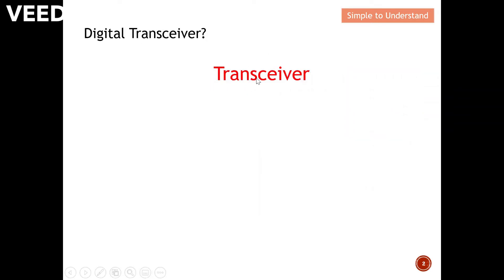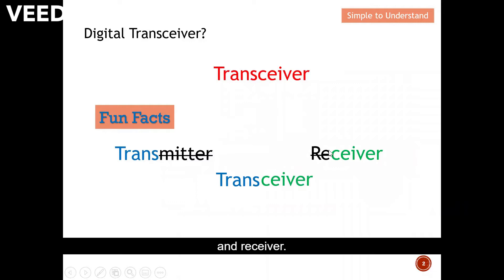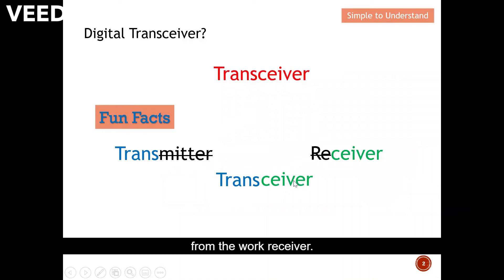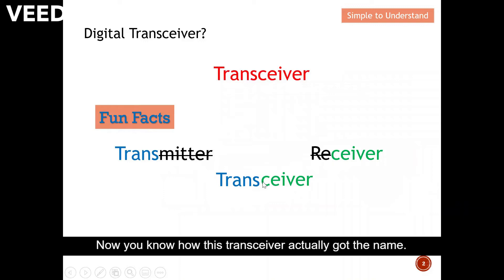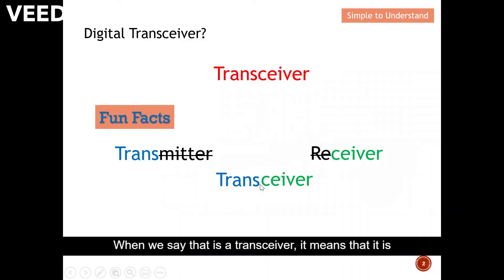So let's start by having a fun fact. How does this transceiver actually got the name? The transceiver actually got the name from both the transmitter and receiver. The trans actually from the word transmitter and receiver from the word receiver. When we say that it's a transceiver, it means that it is capable to transmit and also capable to receive.